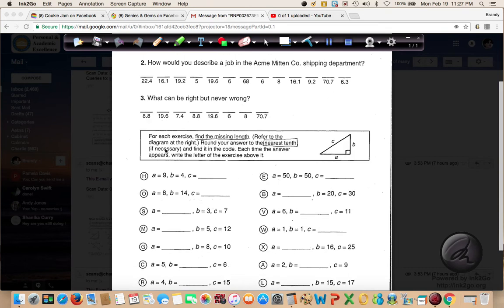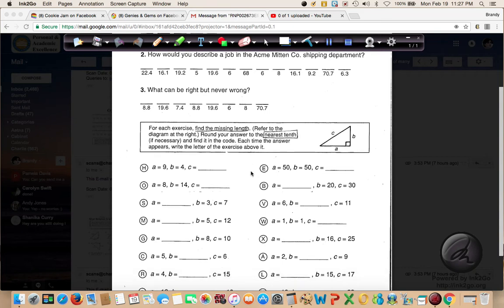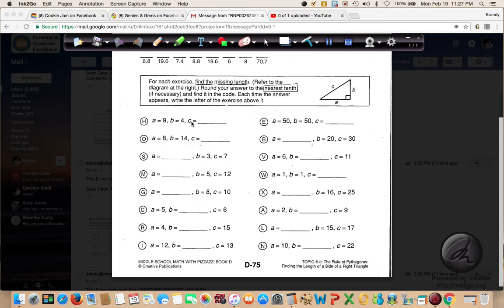So what we're going to do is for each exercise, find the missing length, refer to the diagram at the right. So they are telling us that all these lengths are our A, B, and C sides for a right triangle. And we are going to round our answer to the nearest tenth, if necessary. And find it in the code. Each time the answer appears, write the letter of the exercise above it.